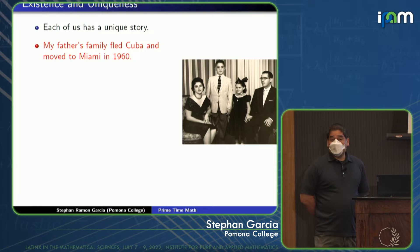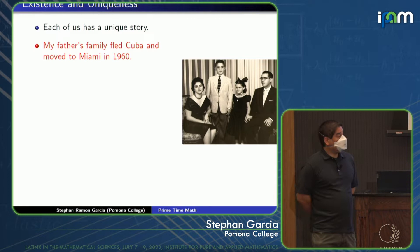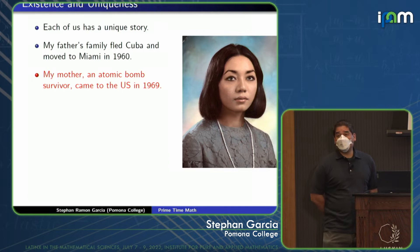My father's family fled Cuba and moved to Miami in 1960. This is my father's family in the mid-1950s before they moved to the U.S. You can draw your own conclusions as to why they moved in 1960. My mother's Japanese and she was born in Hiroshima in 1943, which history will tell you is not a good time to be born in Hiroshima. She's actually an atomic bomb survivor and came to the U.S. in 1969. What would you expect from a Cuban and Japanese person? Of course, they met in New Jersey.